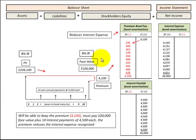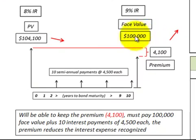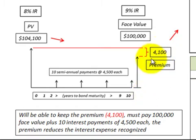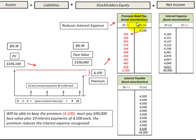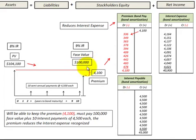Let's look at how this premium on bonds payable reduces the interest expense that we recognize on that bond. We issue a bond with a $100,000 face value and receive $104,100 for it in cash — a premium of $4,100. We get to keep that premium amount, but we must pay back the $100,000 face value at maturity, plus 10 semiannual interest payments of $4,500 each. This premium is also used to amortize the bond down from $104,100 carrying value when issued to its $100,000 carrying value at maturity.